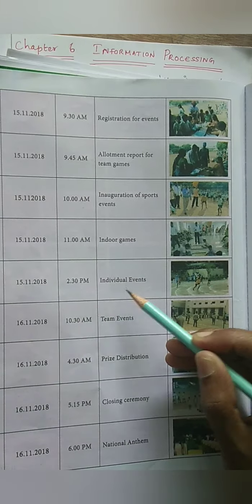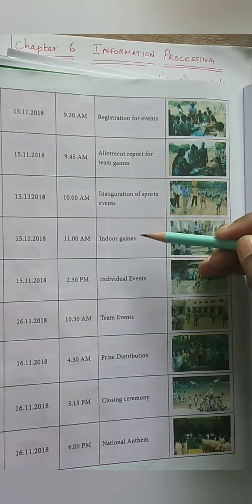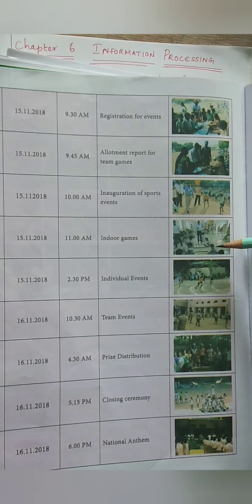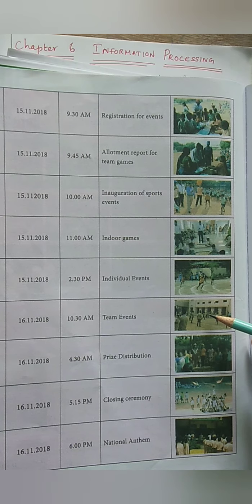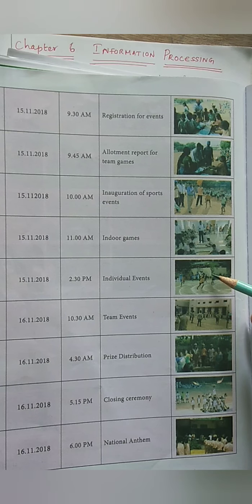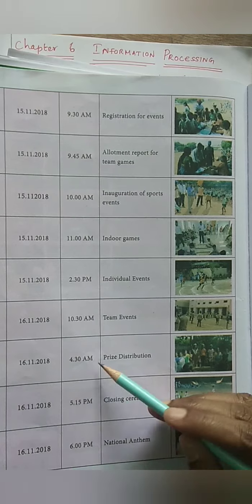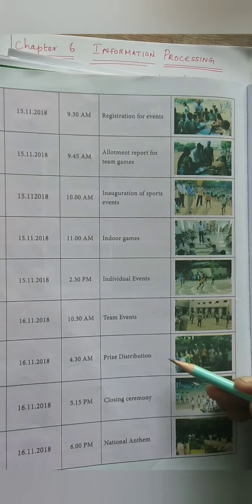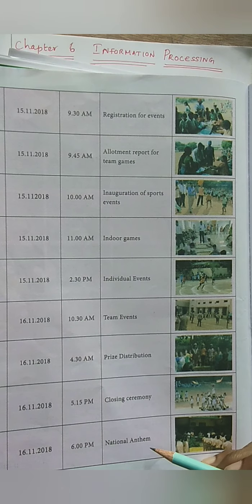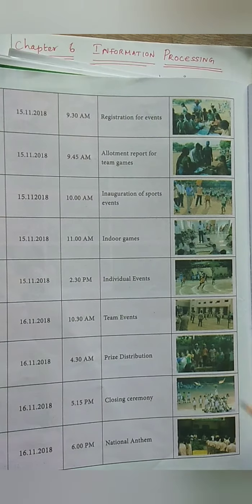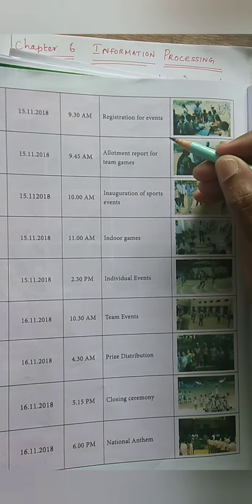Day 1 is over. Coming to Day 2 on the 16th, at 10:30 AM the team events start. They have given indoor games - carom, chess and the like. Team events are kabaddi, basketball, and individual events include running and high jump. Finally at 4:30 there is prize distribution for all the games. Then the closing ceremony - they close the sports meet - and finally they end the session with the national anthem. This is how I prepare a schedule list for any task or activity.